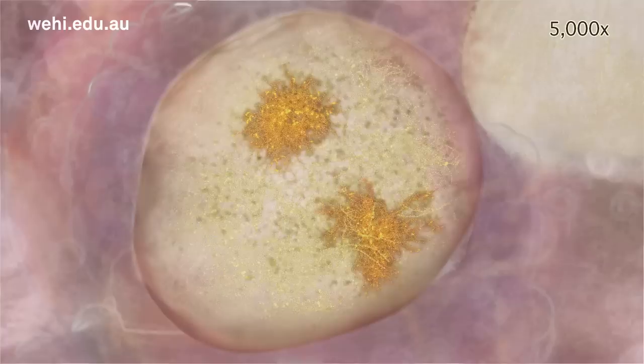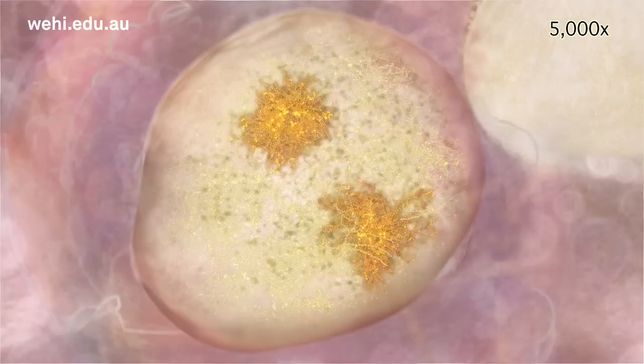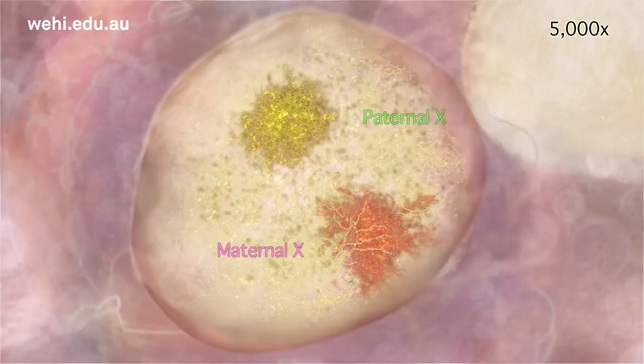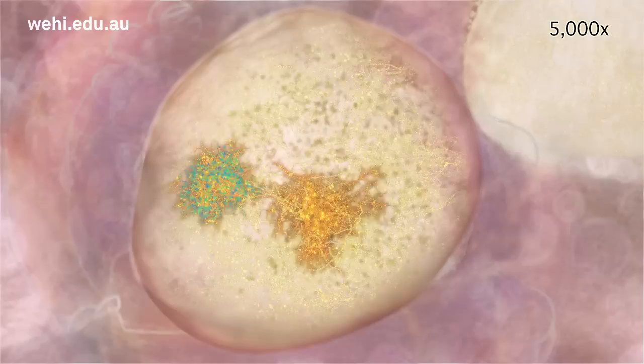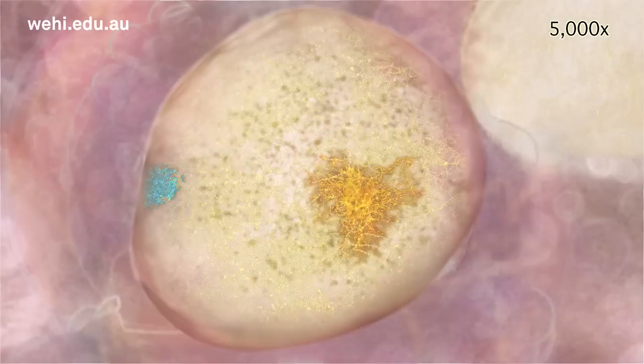Epigenetic inheritance can be visualized by the process of X inactivation. This is a close-up of a single cell from a 100-cell embryo approximately four days old. At this early stage of development, female embryos still have two active X chromosomes — one inherited from the father, the other from the mother. Around this time, the two active X chromosomes interact transiently and one is inactivated, while the other is kept active. This process is mediated by both RNAs and proteins.